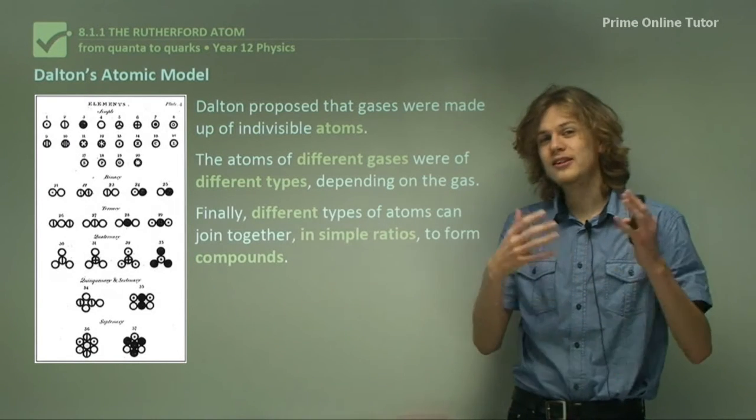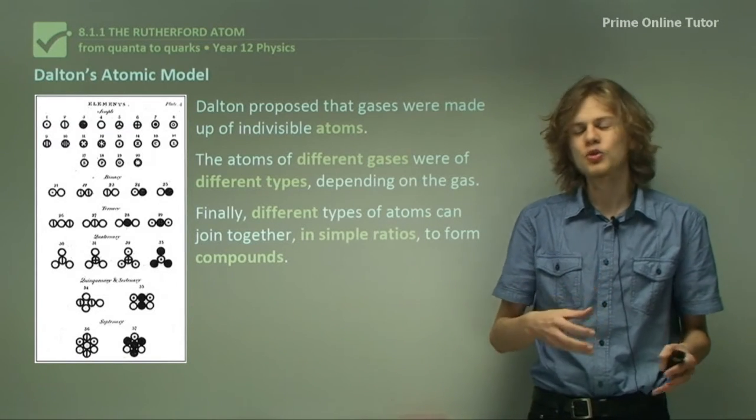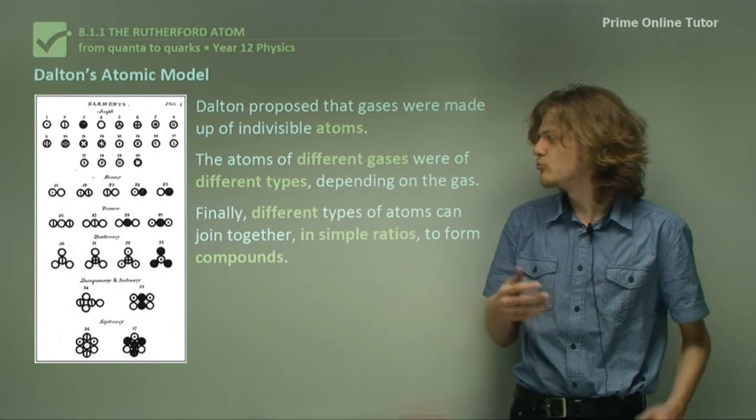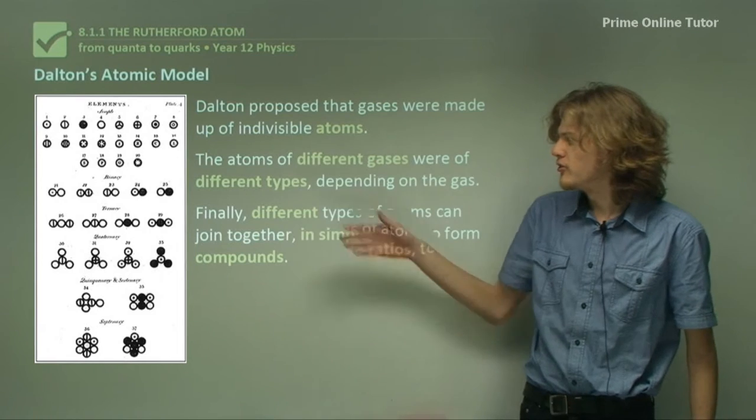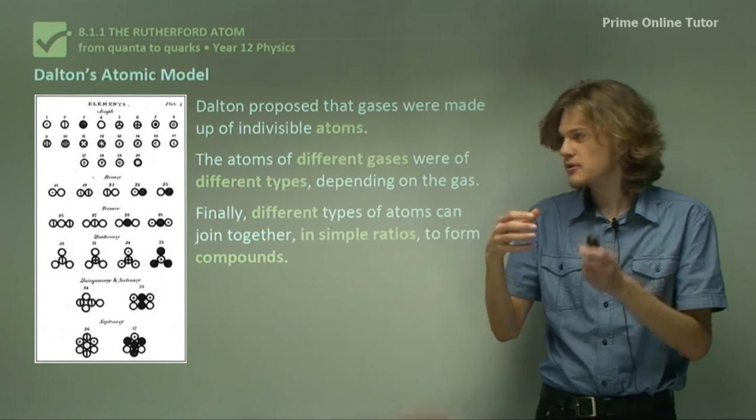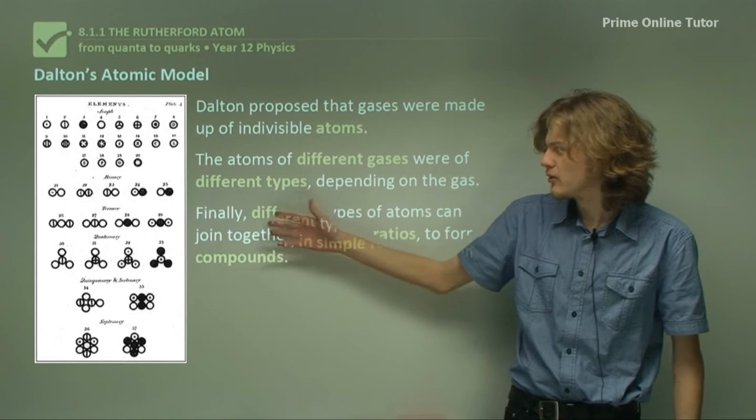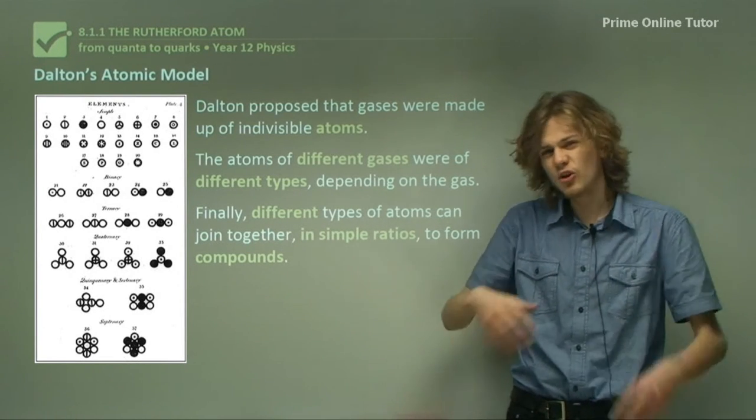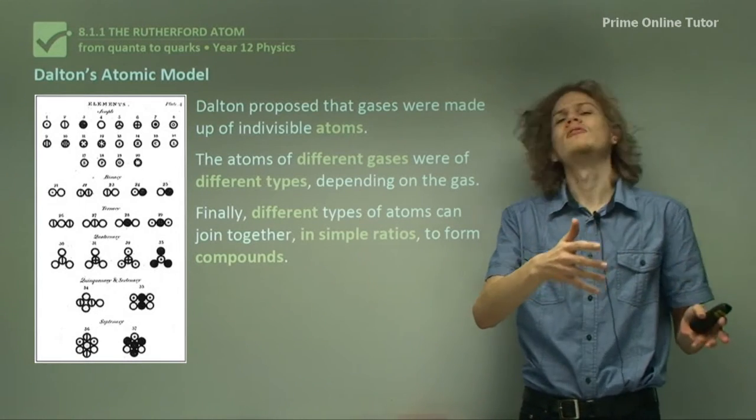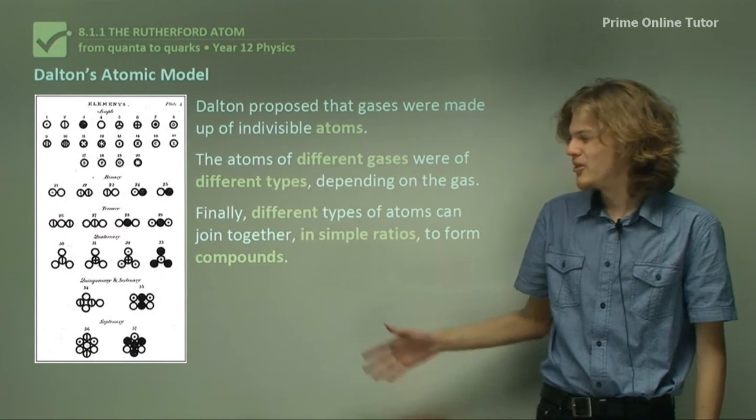And he also thought that different sorts of atoms and different elements could join together to produce compounds. And we can see some of those in the middle and at the bottom of his working out. So in the middle we have binary compounds, which are joined of two different atoms. Then we have ternary, which are three different atoms in a compound. Then quaternary and a few others. And not all of these are completely correct. Some of them were correct. And in fact, we still use that sort of model today when we're describing gases. But this isn't the whole story.